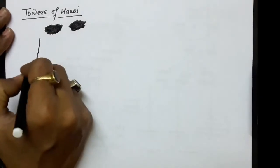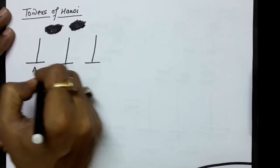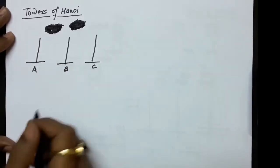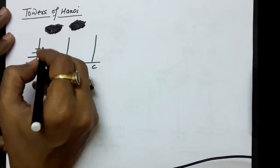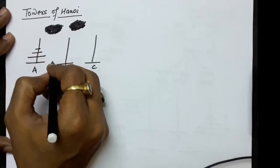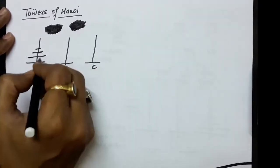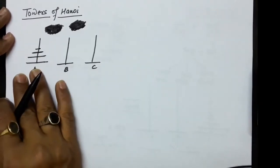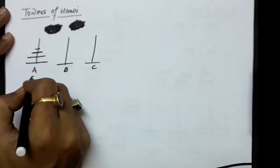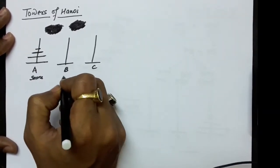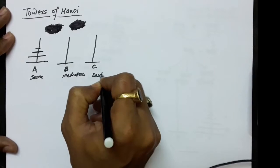Let us say we have three towers. Let me remind you what the Towers of Hanoi problem is. There are three towers — A, B, and C. There are some disks on tower A and, considering the disk from the top, the disks are in ascending sequence towards the bottom in size. The problem is to shift the entire disk arrangement to C, taking B as a mediator. So A is working as a source, B is working as a mediator, and C is working as the destination.